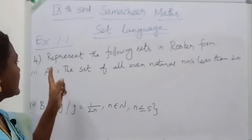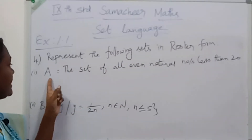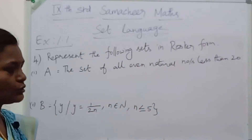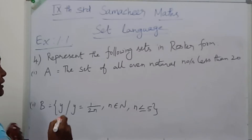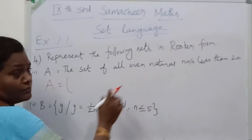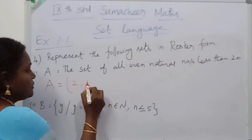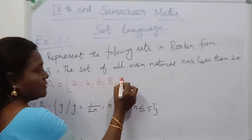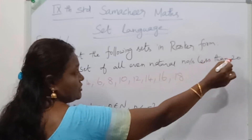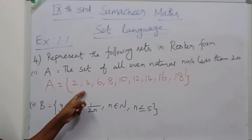See the 4th question: represent the following sets in roster form. First division: A = set of all even natural numbers less than 20. Even natural numbers start from 2, so A = {2, 4, 6, 8, 10, 12, 14, 16, 18}. Since it is less than 20, we cannot add 20. This is the roster form of the given set.